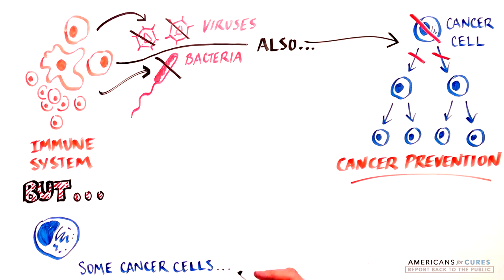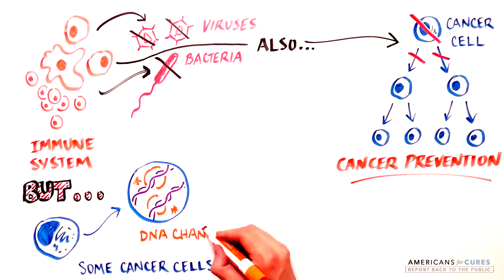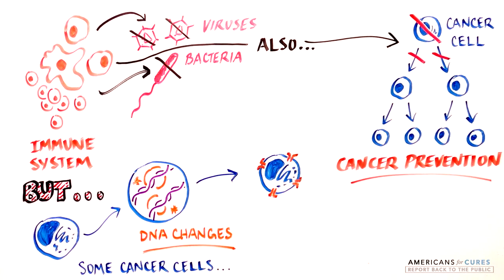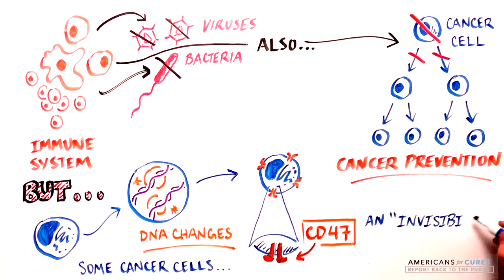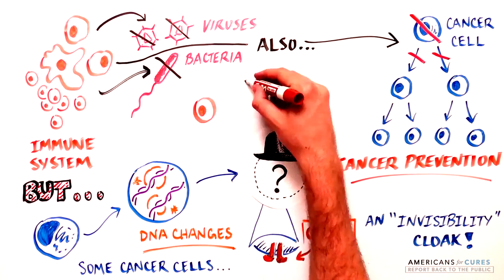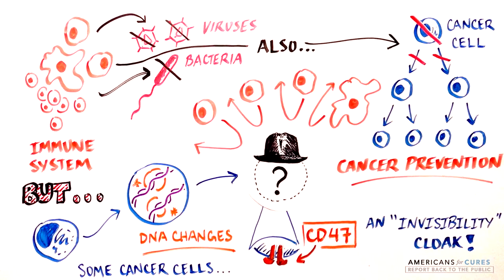However, some cancer cells acquire changes in their DNA sequence and begin to produce high levels of proteins that render these cells invisible to the immune system. One such invisibility cloak is the protein CD47, which helps give cancer cells and cancer stem cells the power to cloak themselves from the immune system's defenses.